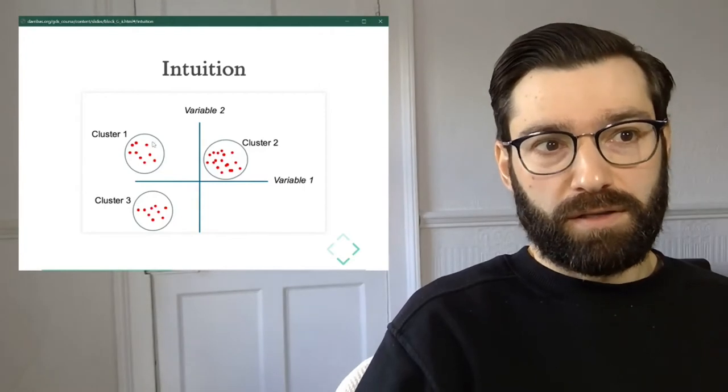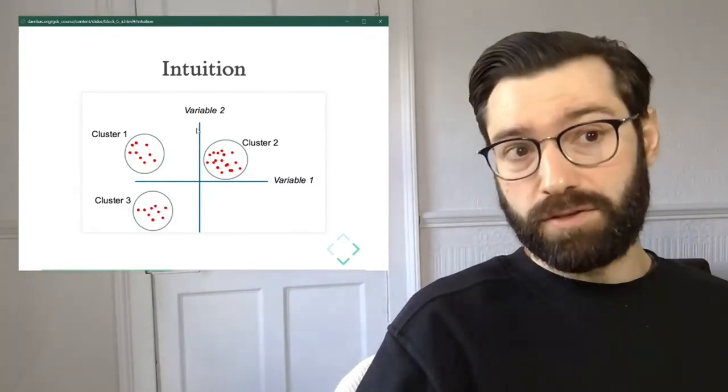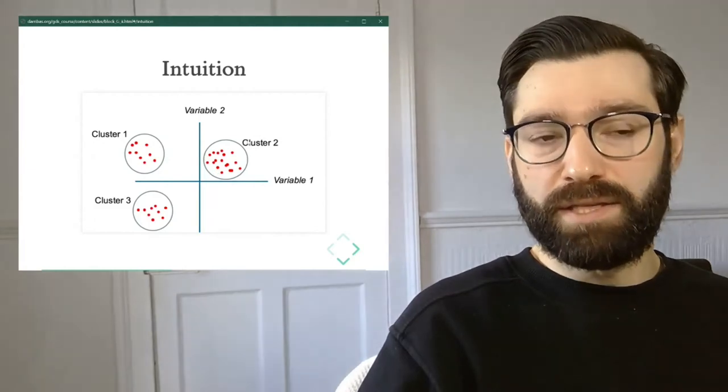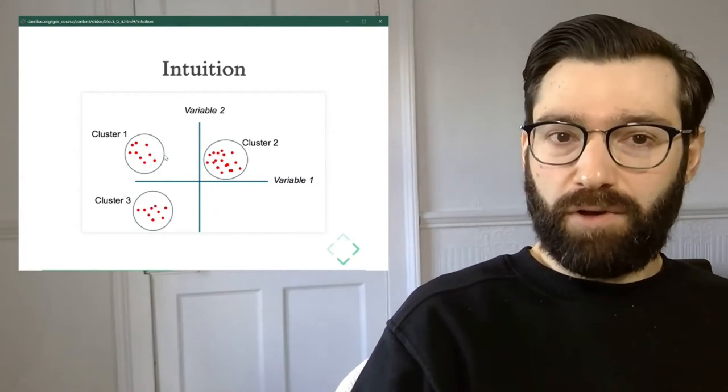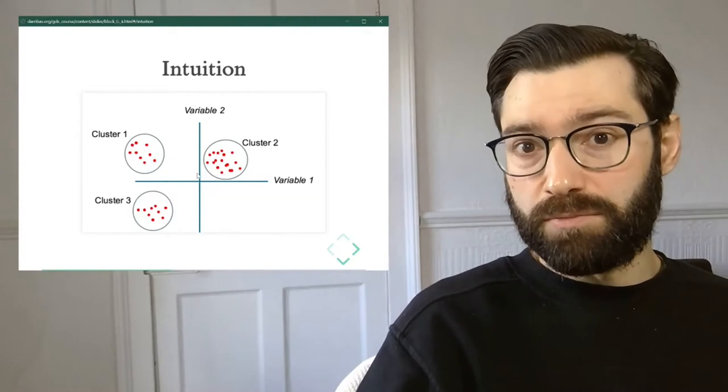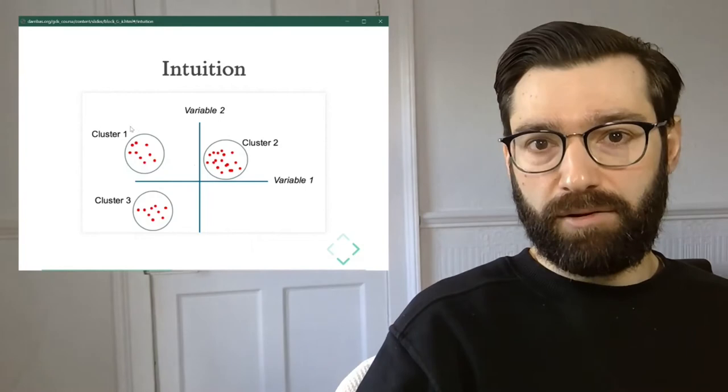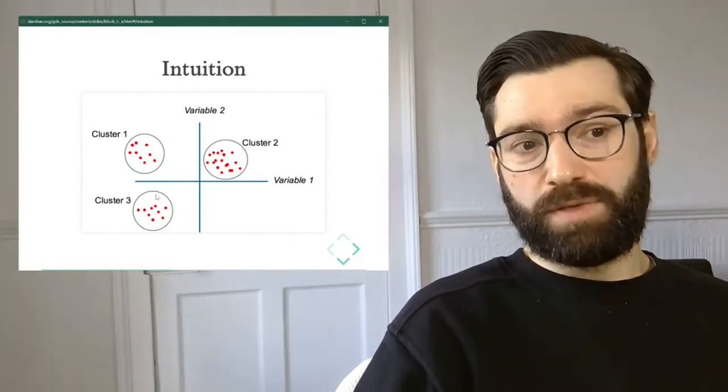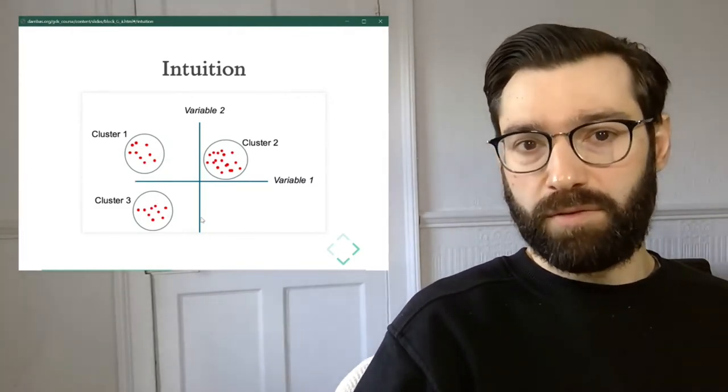In this example, there are three types of observations. There are some observations that have high values of variable one and high values of variable two, located in this part of the scatter plot. There's another set with low values of variable one but high values of variable two. And then a third cluster with low values of variable one and low values of variable two.